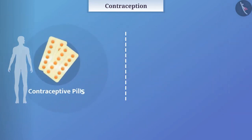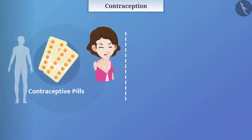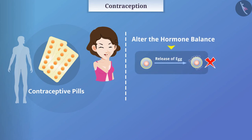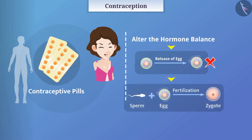Contraceptive pills are medicines consumed by women that alter the hormone balance. This does not lead to release of egg and hence there is no possibility of fertilization. They may also have some side effects.